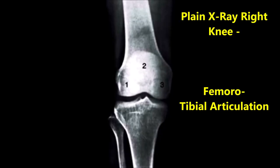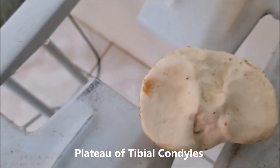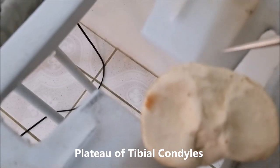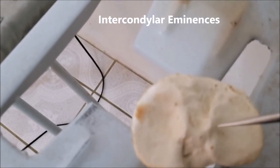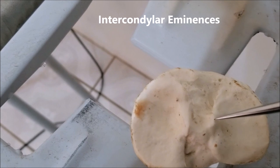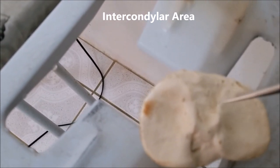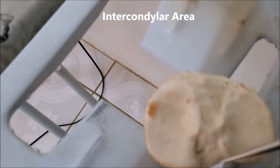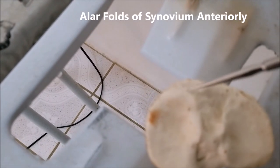This is the plain X-ray of the right knee to show the femorotibial articulation — this is the knee joint proper. Let's focus on the tibia, the tibial plateau. We can see this portion in the middle, called the intercondylar area, and there are two elevations — one on each side — referred to as the medial and the lateral intercondylar eminence. For the most part, this intercondylar area is outside the synovial membrane reflection. Only a little portion anteriorly is within the synovial membrane.